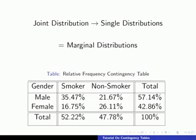If we look at the last column of our table, we can see that 57.14% of students were male and 42.86% were female, regardless of their smoking status — this is our marginal distribution of gender. On the bottom row, 52.22% of students surveyed were smokers, while 47.78% were non-smokers, regardless of their gender — and this is the marginal distribution of smoking status.